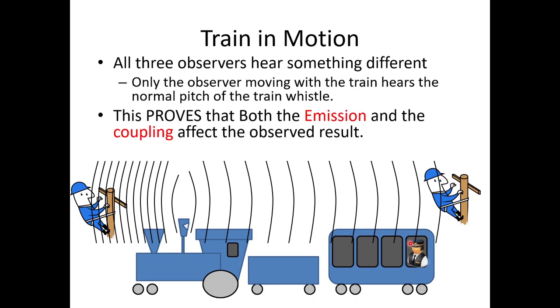Now when the train is in motion, the lineman ahead of the train is going to hear the sound of the whistle compressed, a higher pitch. The lineman behind the train is going to hear the sound of the whistle lower pitch, which proves that emission sources have to have transvariation.